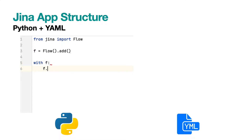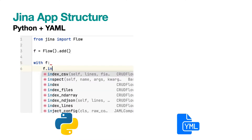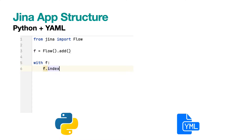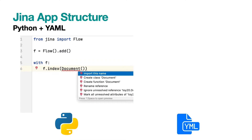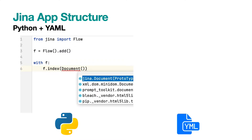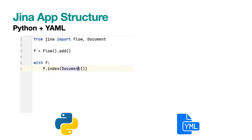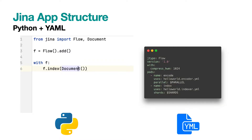However, for YAML config, it doesn't help so much besides simple code highlighting. This could slow down your development speed as you have to navigate through the documentation and codebase in order to figure out which component or argument you really want to use.